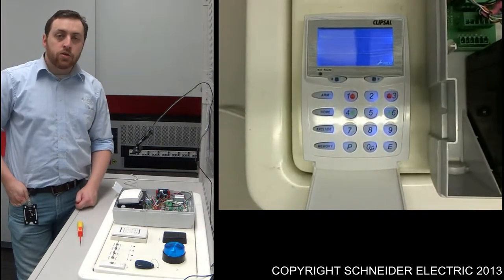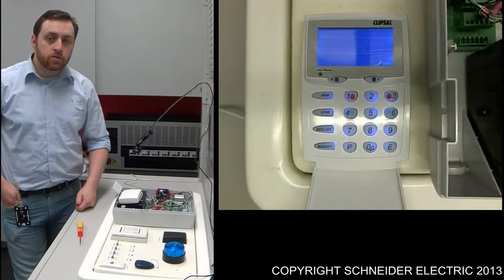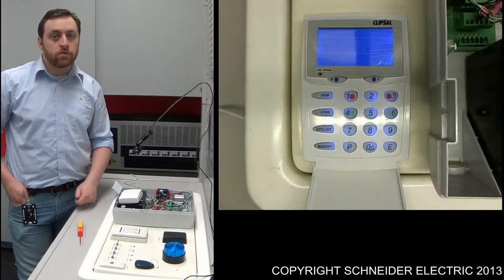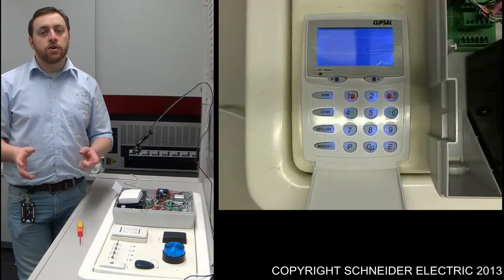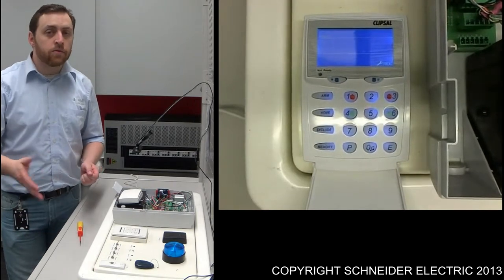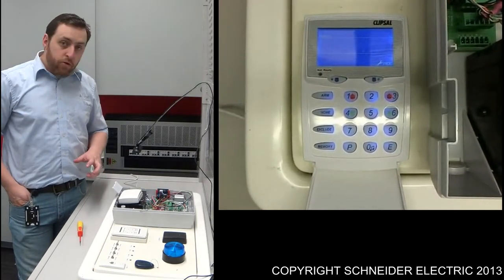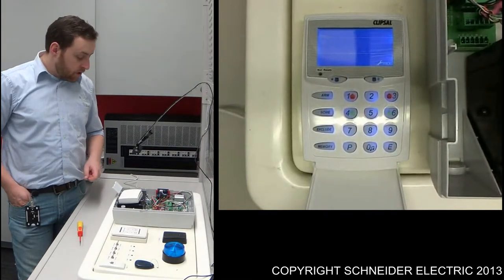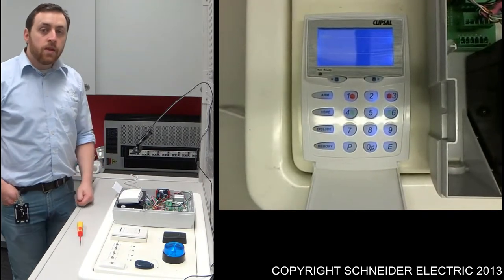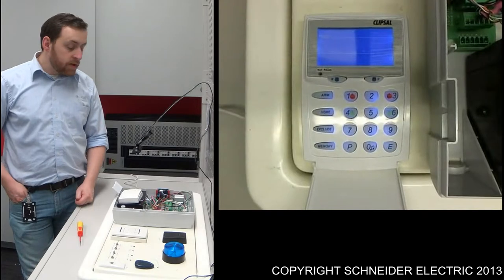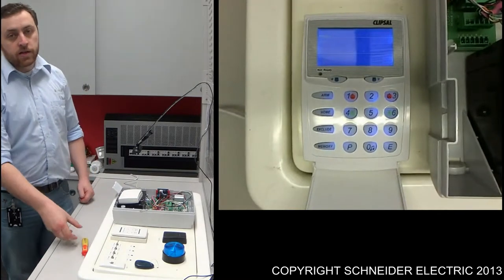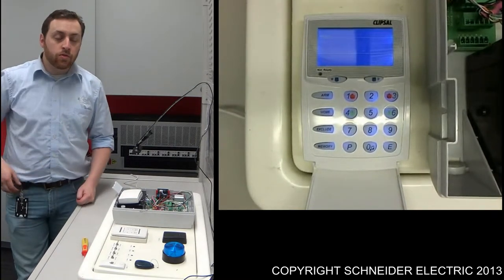The next step is to enter in what's known as the installer mode. The installer mode as a default, the code is six zeros. Both of these codes are going to depend on how the system has been set up, if they've been changed or if they're the same. Typically they're going to be changed for security reasons. Because my board's default, I'm just going to use the default passcode, just go P123456E. Now I'm in the installer mode. You can tell you're in the installer mode by that icon down the bottom there. The program mode's flashing, therefore in installer mode.